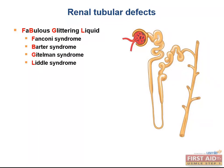The F in fabulous is for Fanconi syndrome, which is a reabsorption defect in the proximal tubule. In Fanconi syndrome, the cells of the proximal tubule dysfunction, which causes all transporters to be affected rather than an isolated transporter defect.